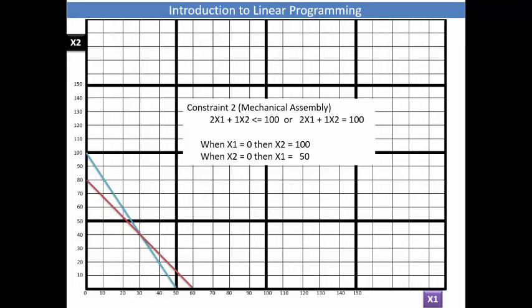Likewise, for constraint 2, we see that when x1 is equal to 0, then x2 is equal to 100. Also, when x2 is equal to 0, then x1 is equal to 50. Again, the corresponding line is drawn.